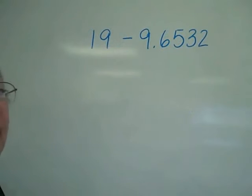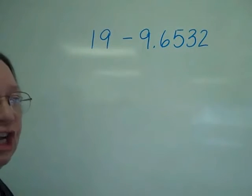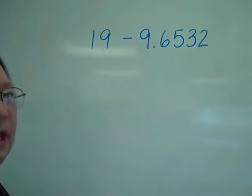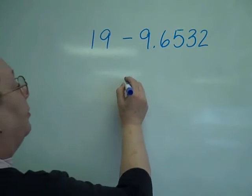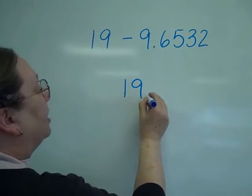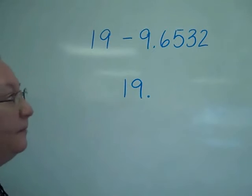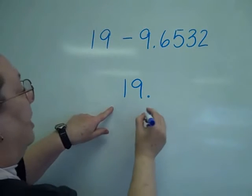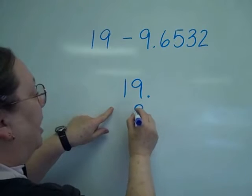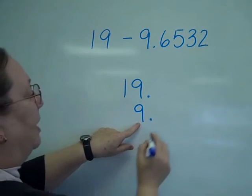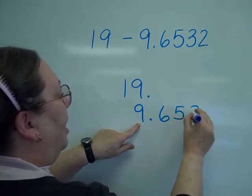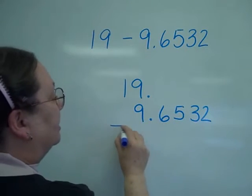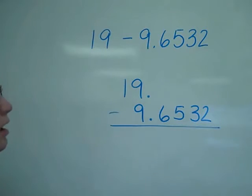Now I want to subtract using a whole number. Remember, just like a sentence, the period is at the end of a sentence, the decimal is at the end of a number. So I'm going to put the 19 with the decimal point right at the end. Looking at the next number, I've got to line up my decimals. So I put my 9 and the 6532 ten thousandths goes below.